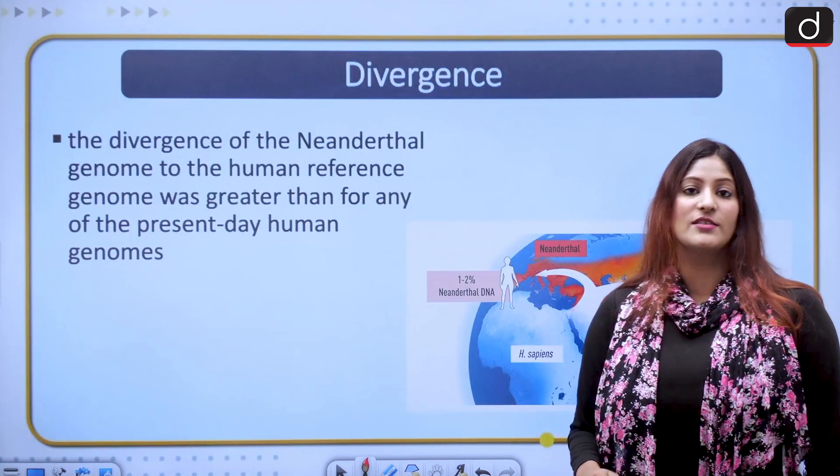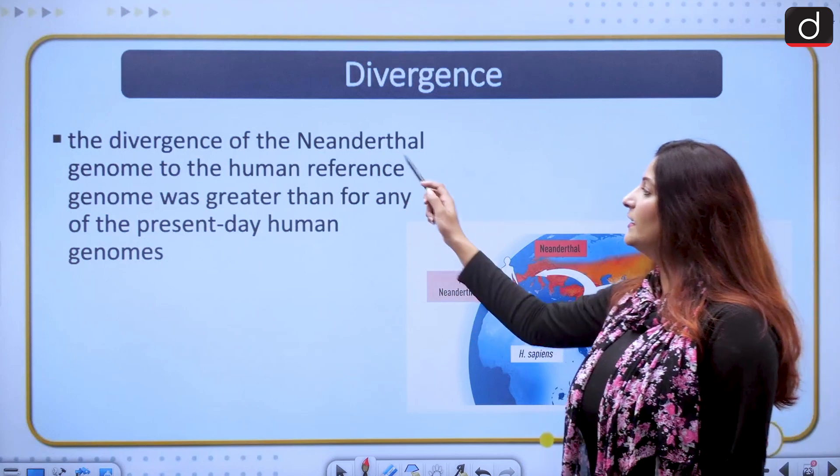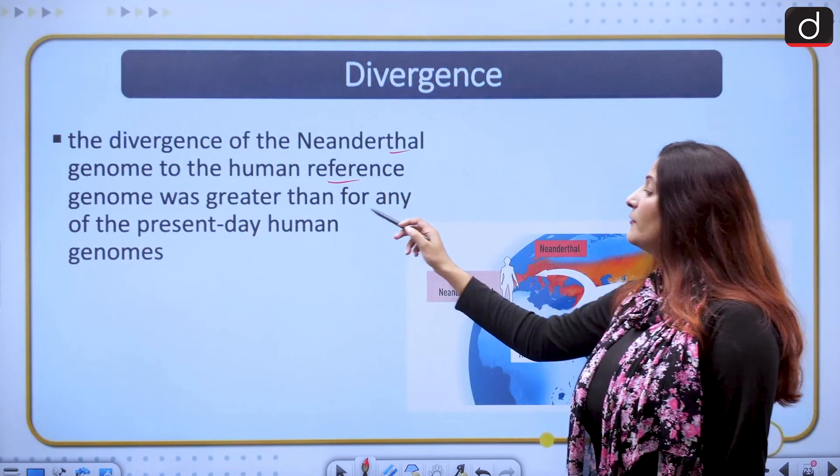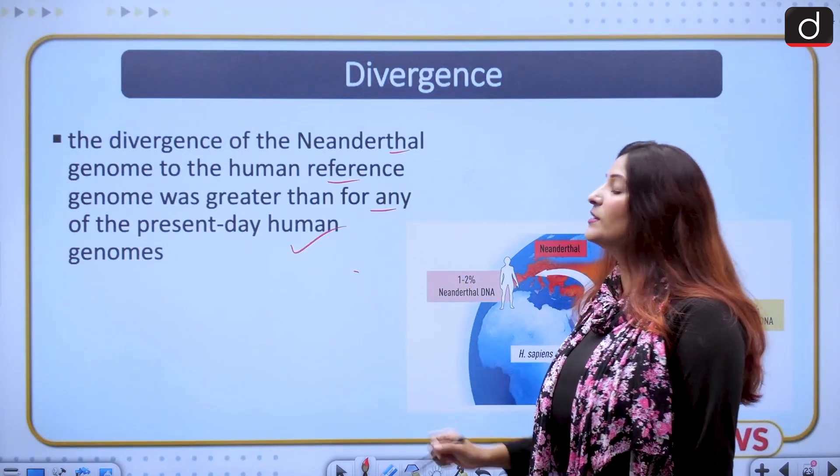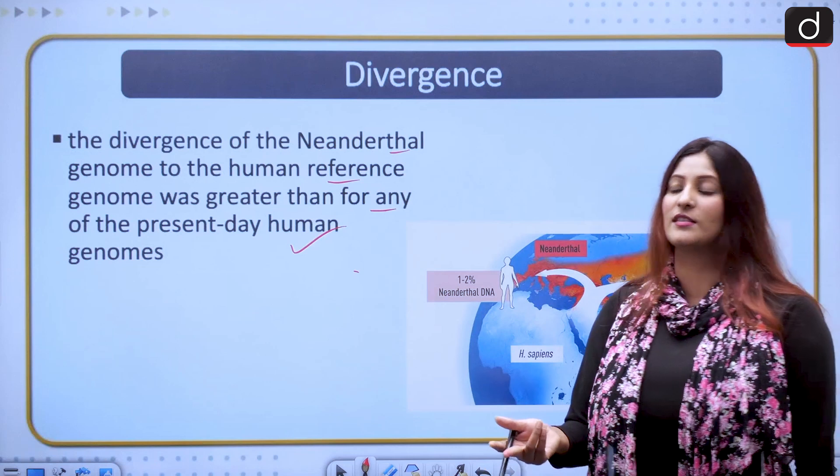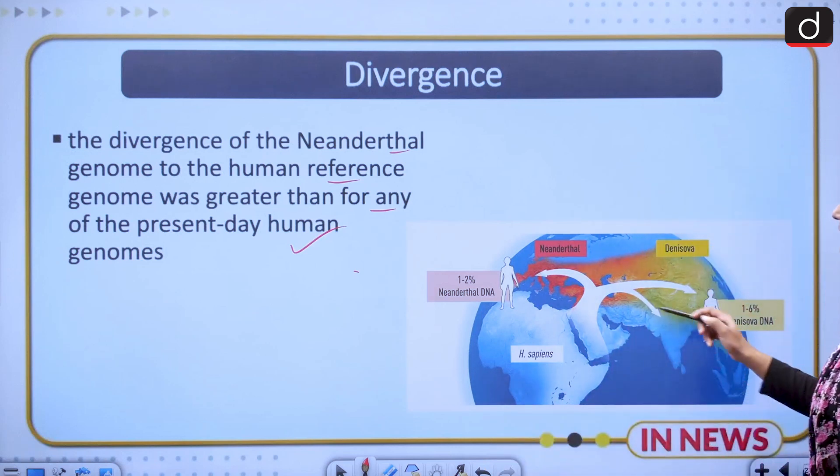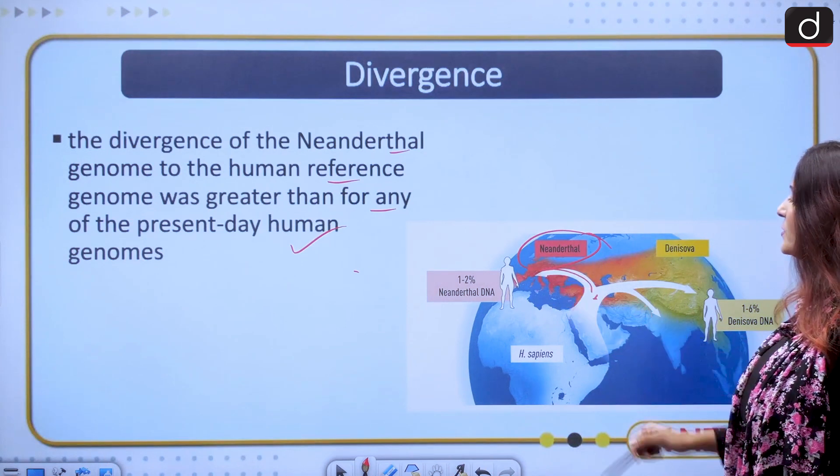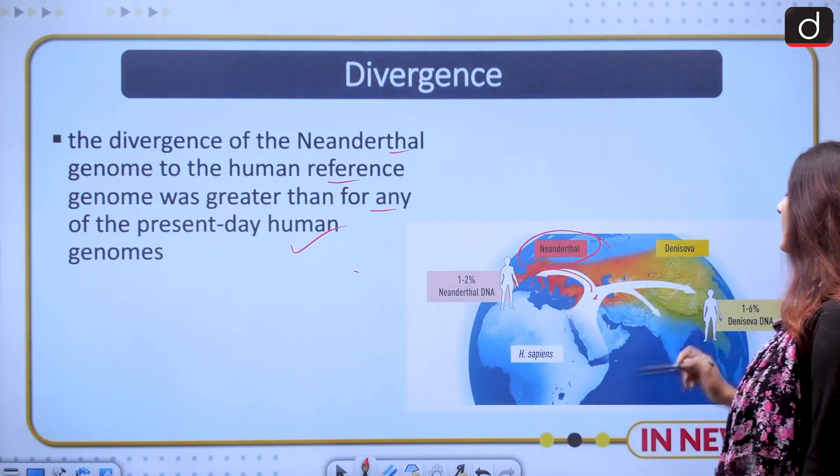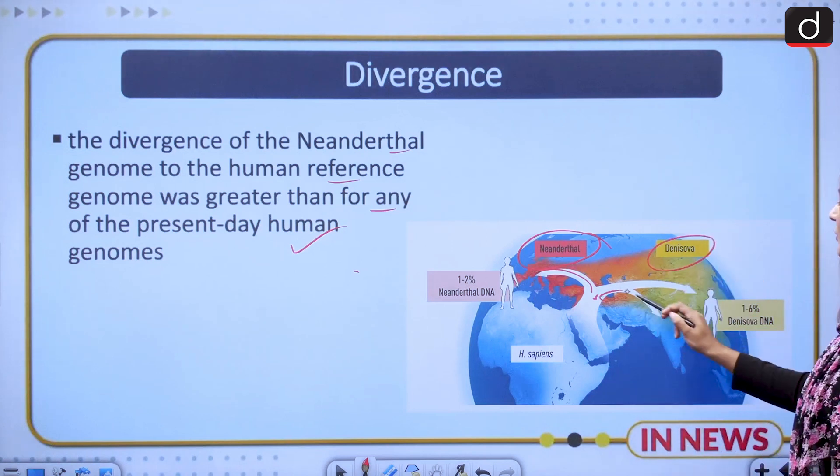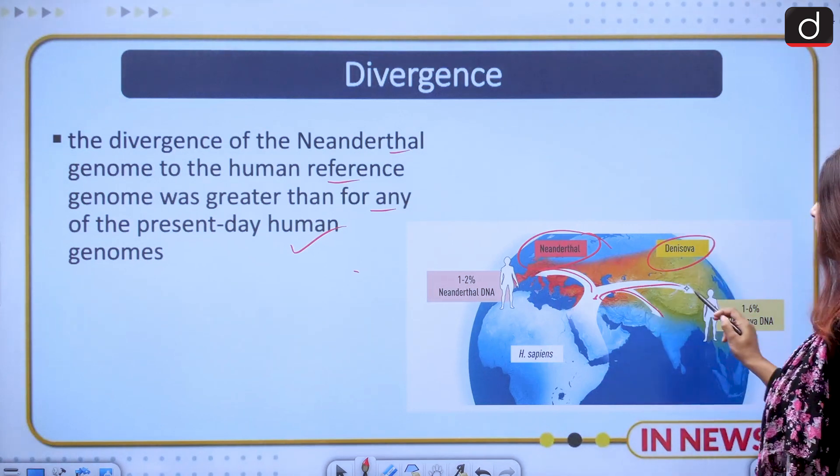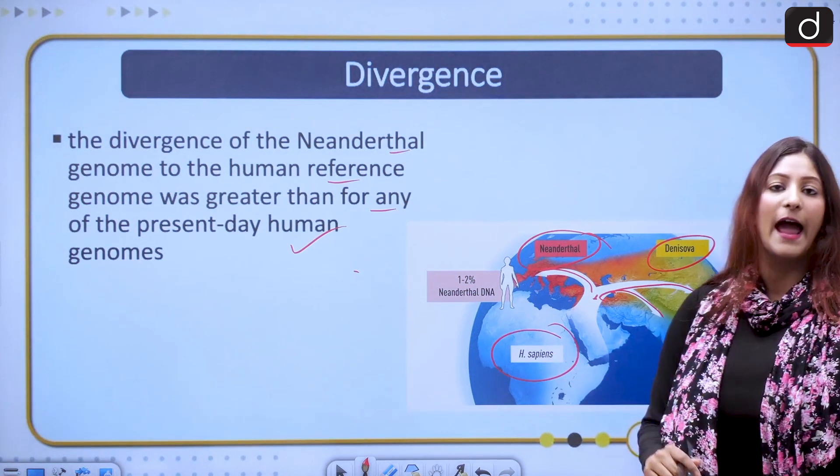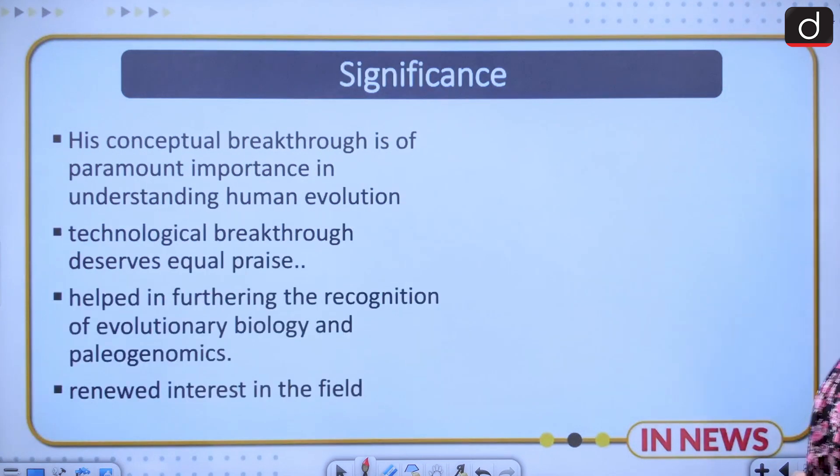There were divergences of course and the divergence of the Neanderthal genome to the human reference genome was greater than for any other of the present day human genome that has been analyzed. There was a distinction. You can see Neanderthals moved from their origin to different areas in West Europe, Denisovan to India and East Asia, and Homo sapiens, how they grew from Africa.